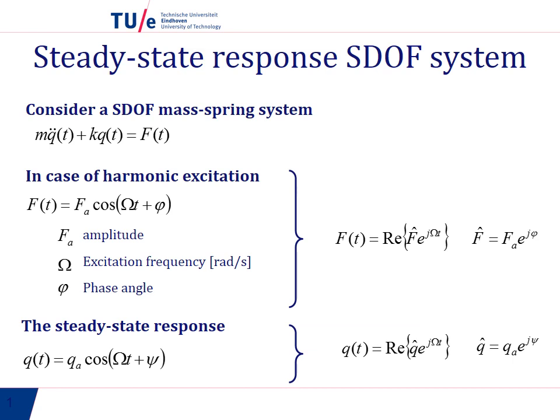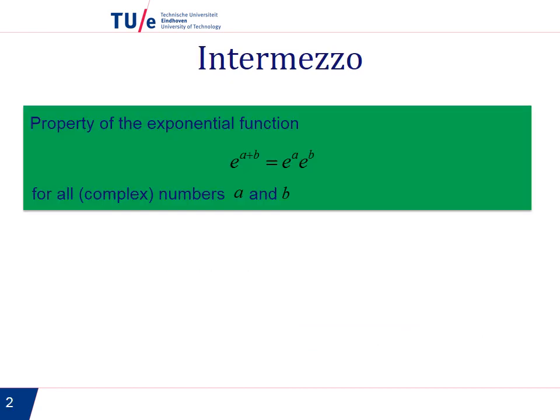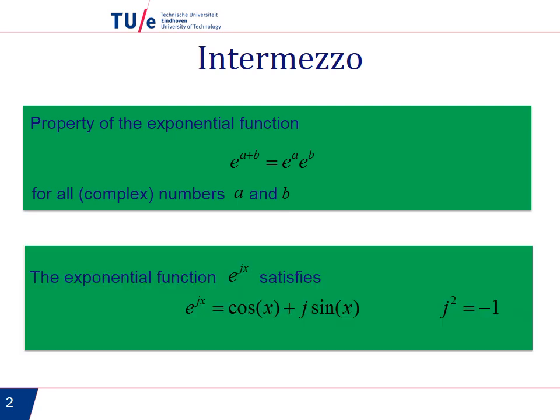Let us take an intermezzo. This is just to remind you that when we have e to the power of a sum of two constants a plus b, that's the same as the product of these two. And the second thing is that an exponential function e to the power of jx is in fact the same as cosinus x plus j sinus x, which is with j squared equal to minus 1.